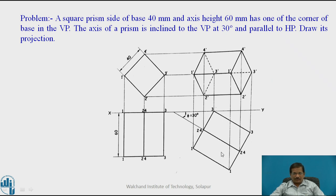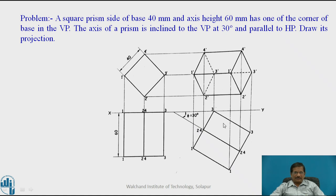When observing from here, the total rectangle — which is converted to a rhombus — will be visible. But the lines related to the base edge or base face at point 3 will not be visible. So lines 3 dash-3 dash, 3 dash-4 dash, and 3 dash-2 dash are drawn as dotted lines. Complete the projection. This is the two-stage problem.